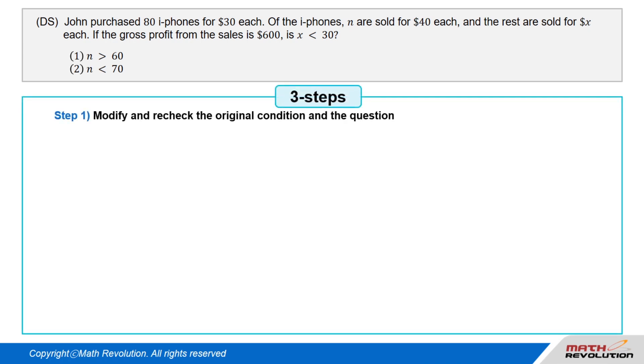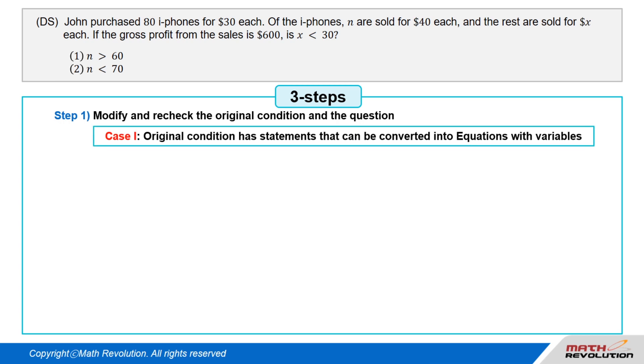Solution. Now we will solve this DS question using the variable approach. Let's apply the three steps suggested previously. The first step: Modify the original condition and the question to suit the type of information given in the conditions. Case 1. Generally, the original condition has statements that can be converted into equations with variables.